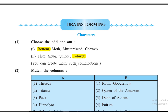Question number one: choose the odd one out. First one — Bottom, Moth, Mustard Seed, and Cobweb. You should know the characters well to answer. The odd one is Bottom, because Bottom is a weaver and the rest are fairies. Second one — Flute, Snout, Quince, and Cobweb. The odd one is Cobweb because Cobweb is a fairy and the others are workers.